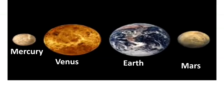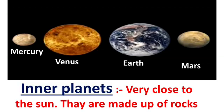The first four planets are Mercury, Venus, Earth, and Mars. These four planets are also called inner planets or rocky planets, because all these four planets are made up of rocks, and they are closer to the sun.